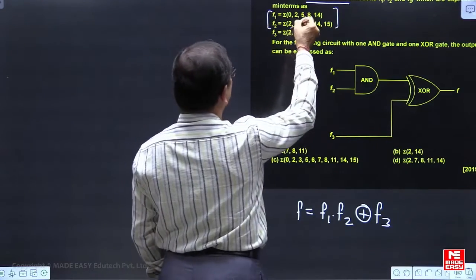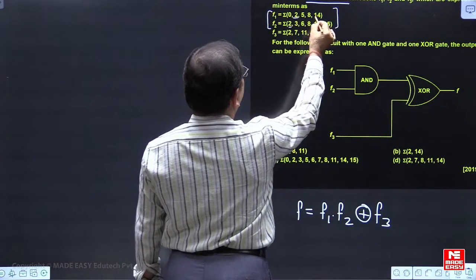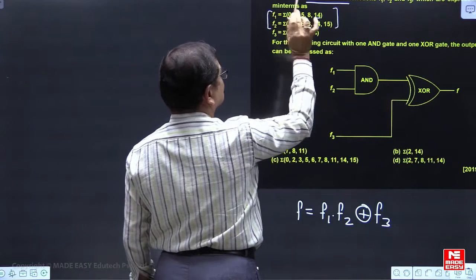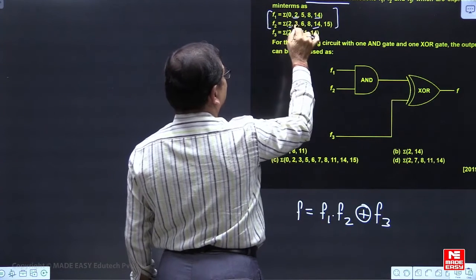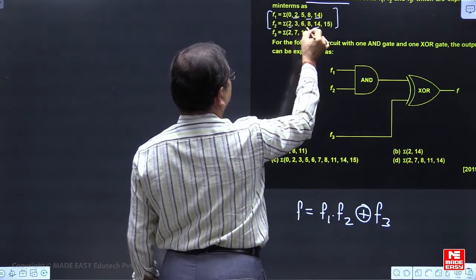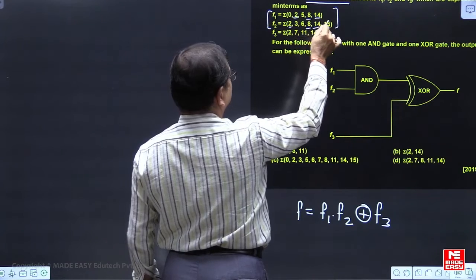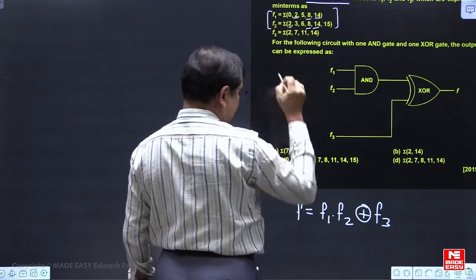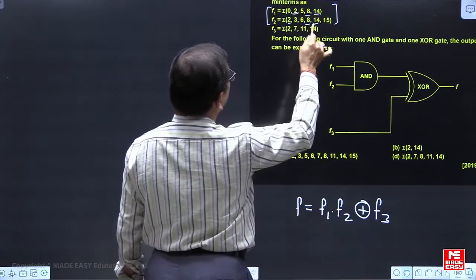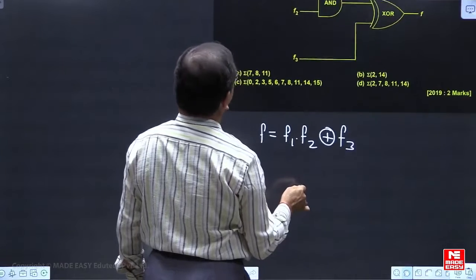So common minterms in two functions, you can see, one is 2 and another is 14. So 2 and 14 only common. 0 both functions mein nahi hai, and 3 both functions mein nahi hai, 5 nahi hai, 6 nahi hai. Of course, sorry, this 8 also. So 8 both the places, 15 both the places nahi hai. So that whenever we are taking f1 AND with f2, the minterms will be 2, 8 and 14.